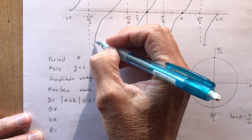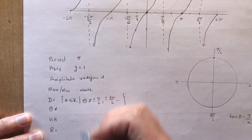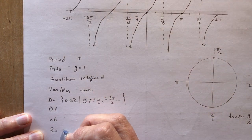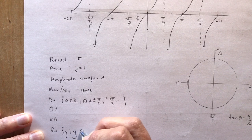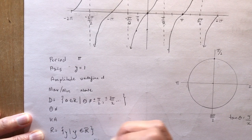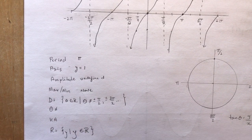what about the range? It goes all the way down, like it's going forever this way and forever that way. So the range is y such that y is just an element of real numbers because it just carries on forever and ever.